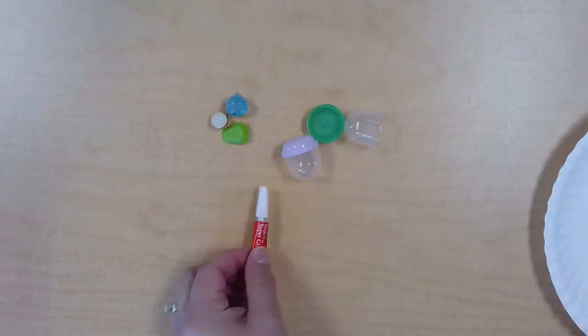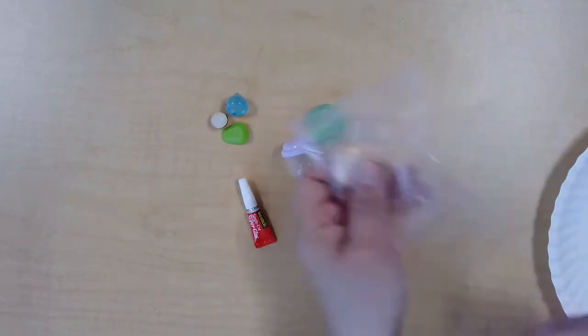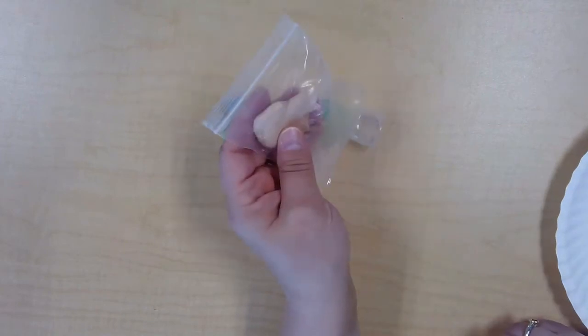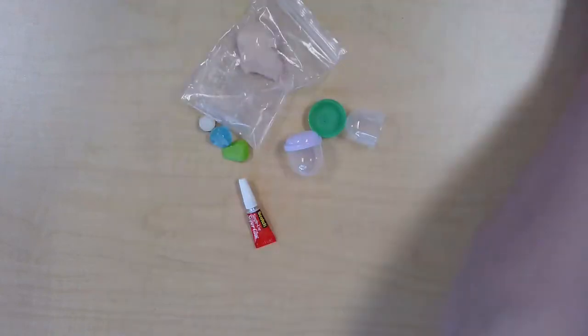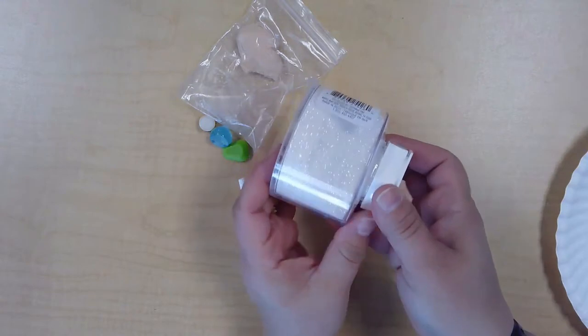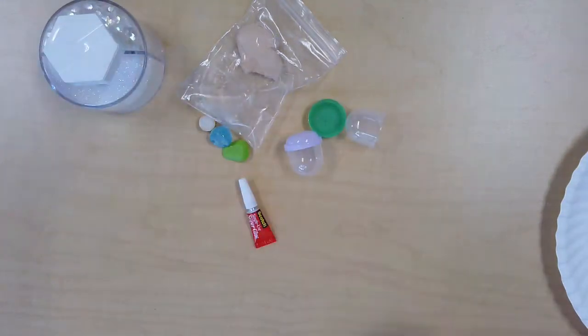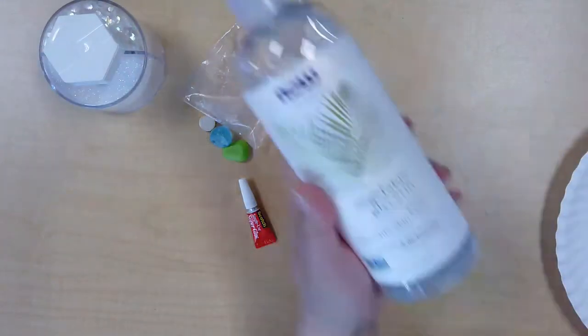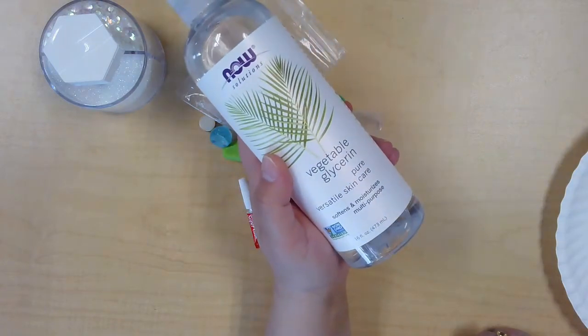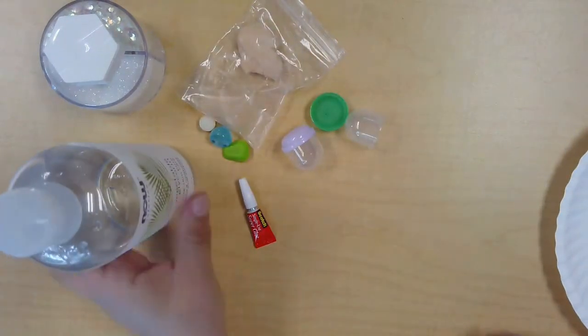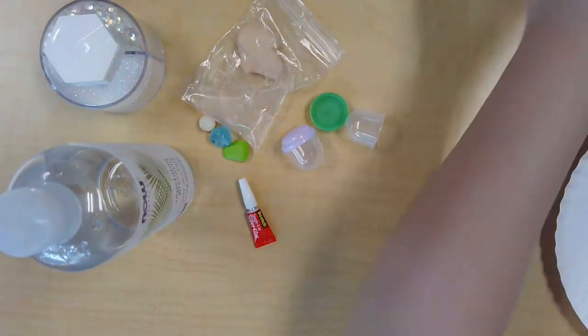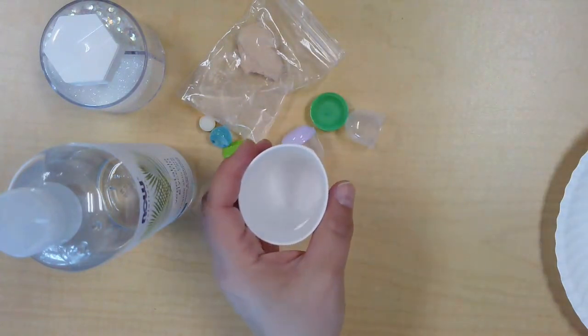You're going to have some mini super glue - be very careful with it - some Sculpy clay, a little baggie of glitter, a little paint pot container of glycerin (it'll have a letter G on it), and you'll need to provide some water.